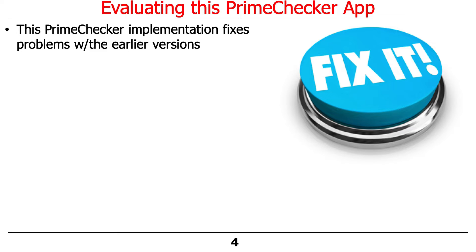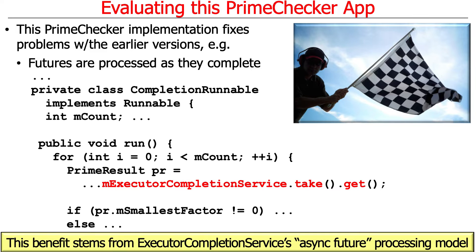This particular implementation of PrimeChecker fixed problems with the earlier versions. The previous version used a synchronous future processing model, which meant that results weren't necessarily returned in the order they completed — you had to wait in a certain order, causing delays. The nice thing about this version is that results go on the internal completion queue only when finished, so we get them in completion order, making it a lot more responsive in many cases.